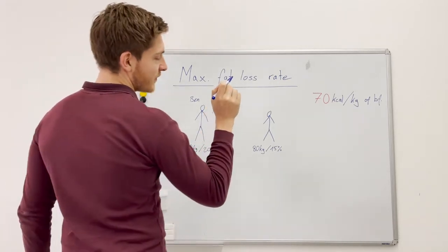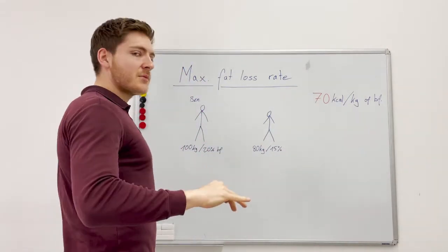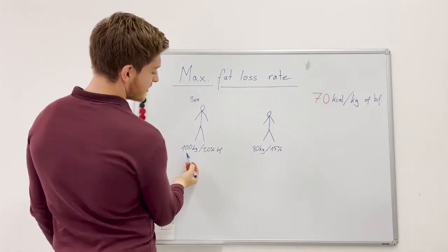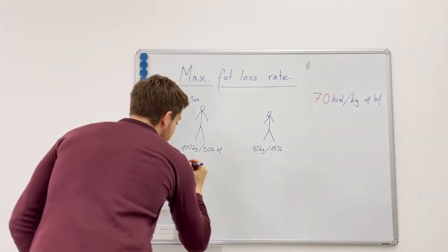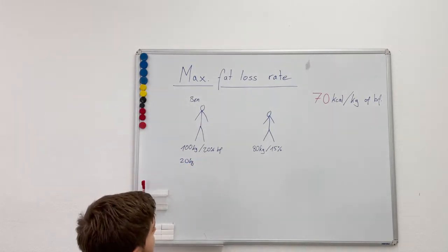With the 70 calories per kilogram of body fat that we can maximally go into a deficit, this one is easy: 100 kilograms, 20 percent body fat means he has 20 kilograms of body fat, right?